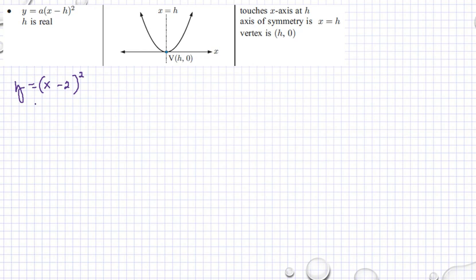I have my root, which is only one. x equals 2, because x minus 2 squared equals 0. Then I can solve this equation and I will get x equals 2.